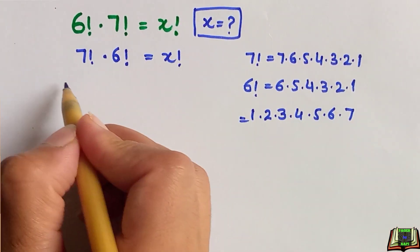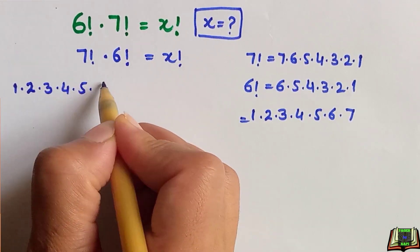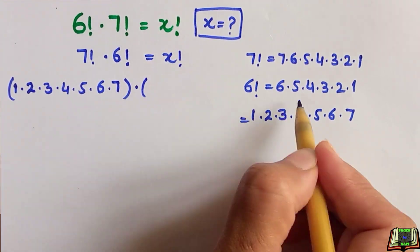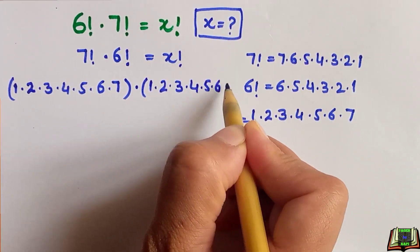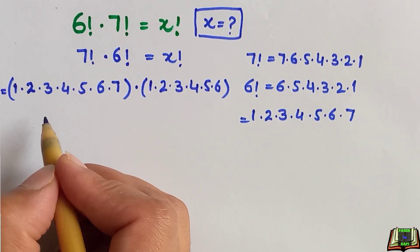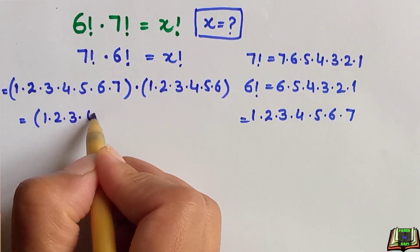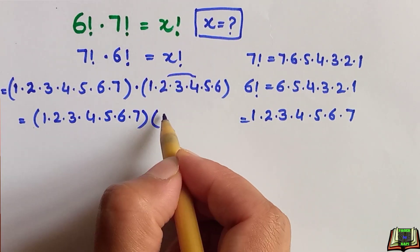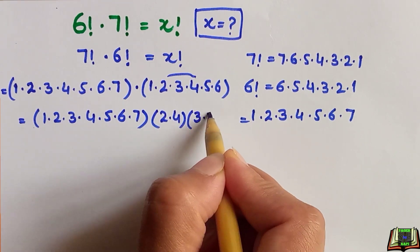We substitute the value of 7 factorial times 6 factorial: 1 × 2 × 3 × 4 × 5 × 6 × 7 for 7 factorial, and similarly for 6 factorial. We then group 2 and 4 together, leaving 3 × 5 × 6 remaining.